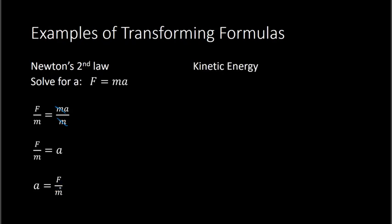Here's another formula for kinetic energy. The formula is E equals one-half times the mass times the velocity squared. Here, we need to solve for m in this case. To solve for m, I need to get rid of this one-half and get rid of the v-squared.